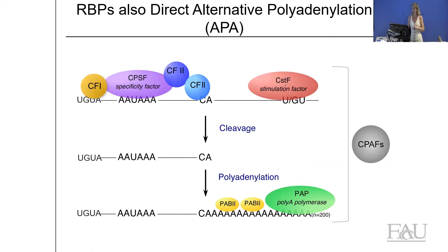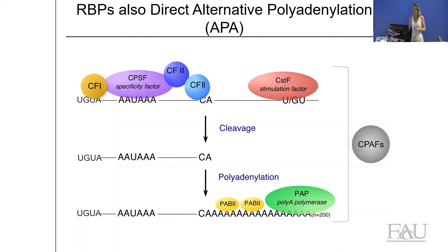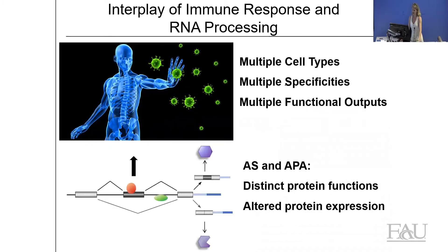Just like with splicing, cleavage and polyadenylation are mediated by a complex of factors — broadly referred to as cleavage and polyadenylation factors, or CPAFs — brought together through weak protein-protein and protein-RNA interactions. The recruitment of CPAFs to a particular site to mediate cleavage can be regulated by RNA binding proteins that either promote recruitment of this complex or sterically occlude it.